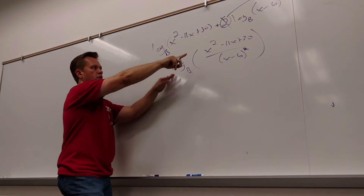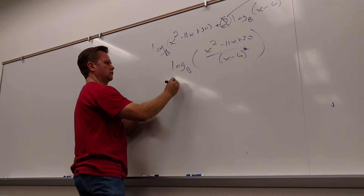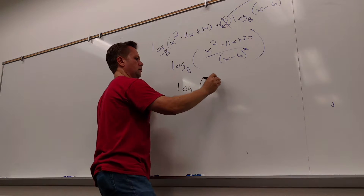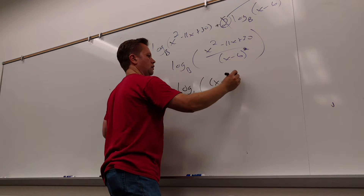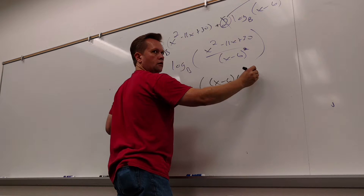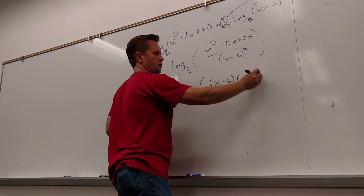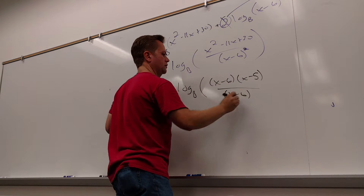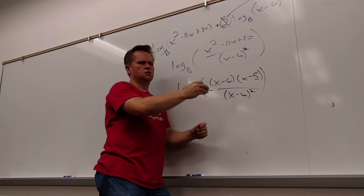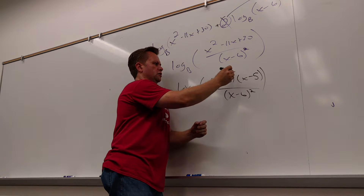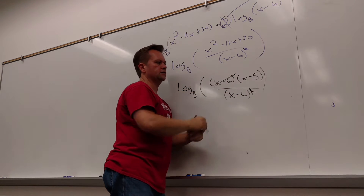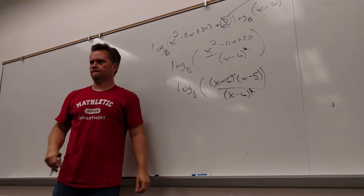Now what can I do with the inside? You get a minus 5, then you can cancel an X minus 6, and then 6 minus 5 gives the final result.